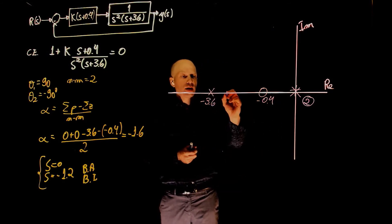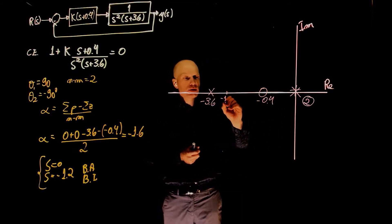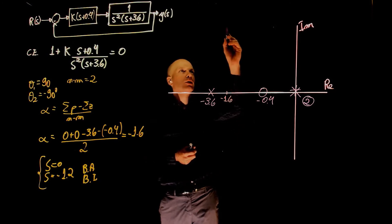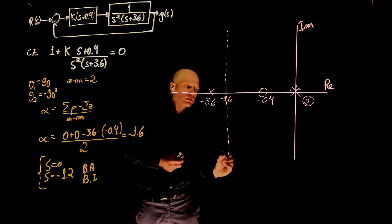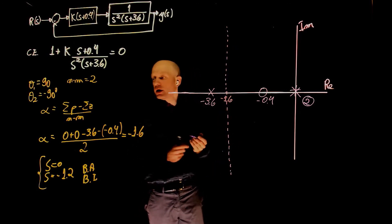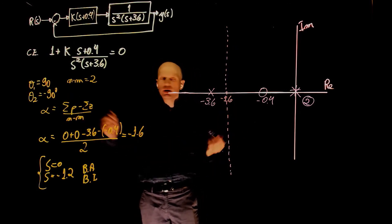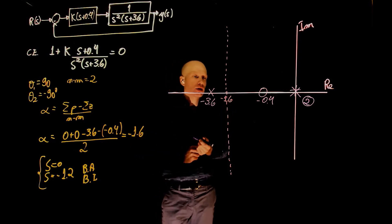We also know that the centroid of the asymptotes is at negative 1.6. We can draw the asymptotes here. One is going up 90 degrees. The other one is going down at a negative 90 degrees, centroid at 1.6.